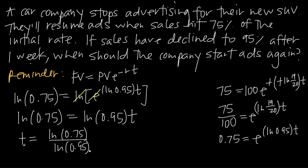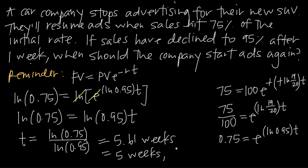To solve for t, we divide both sides by ln of 0.95, giving natural log of 0.75 divided by natural log of 0.95. Using a calculator — remembering time is in weeks — we get t is about 5.61 weeks. Multiplying 0.61 by 7 days gives approximately 5 weeks and 4 days. That's how long it takes for sales to decline from 100% to 75%, so that's when the company should expect to start running ads again. And that's how you apply the exponential growth and decay formula to a sales decline problem.